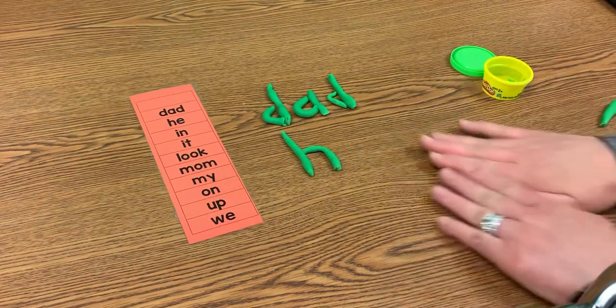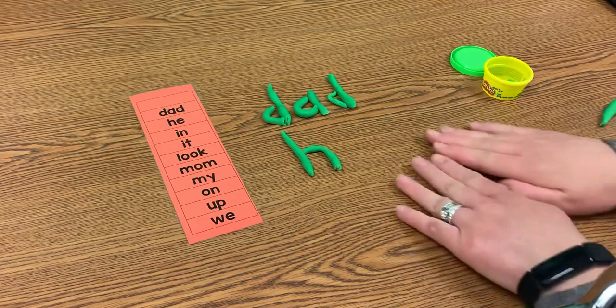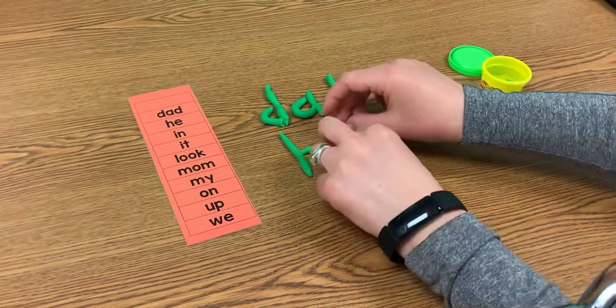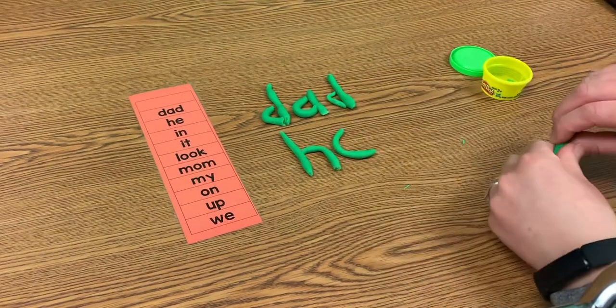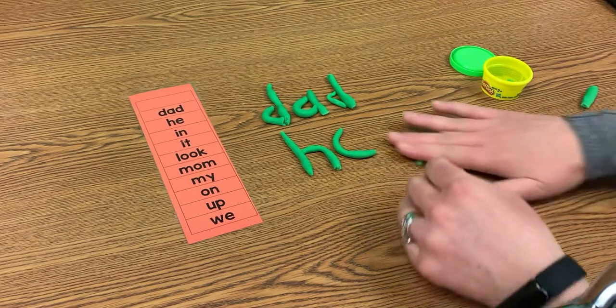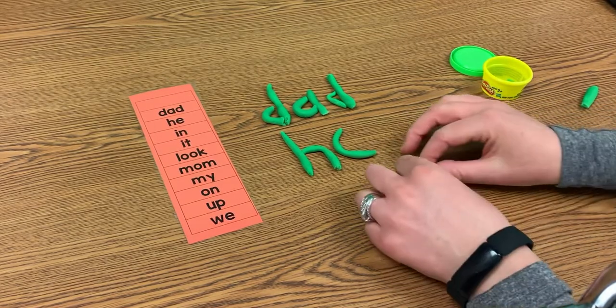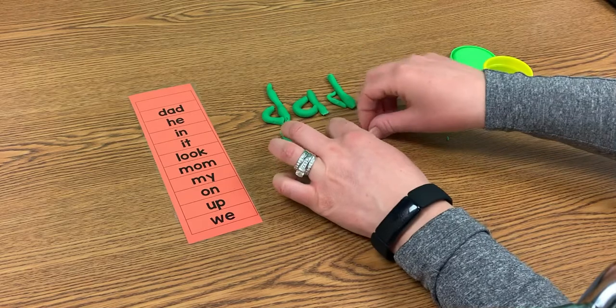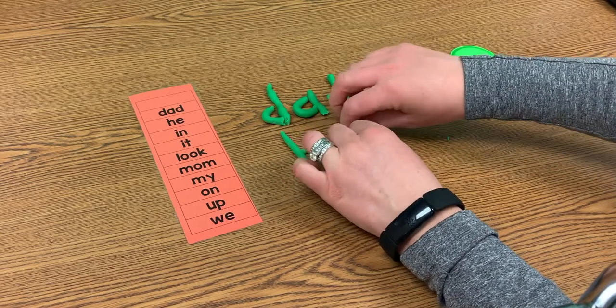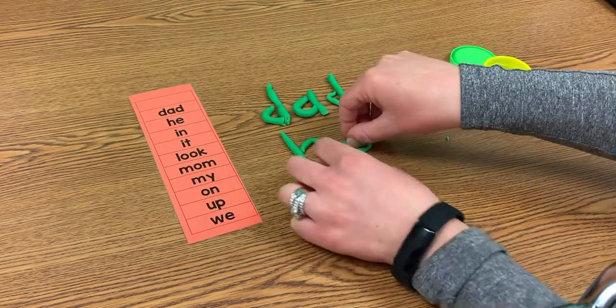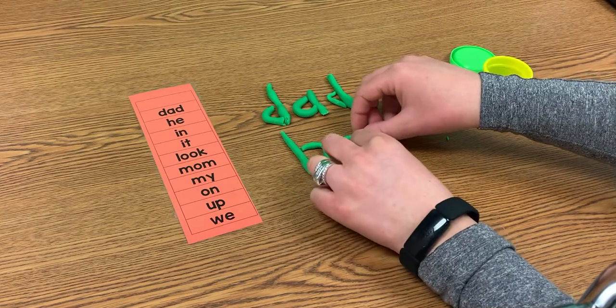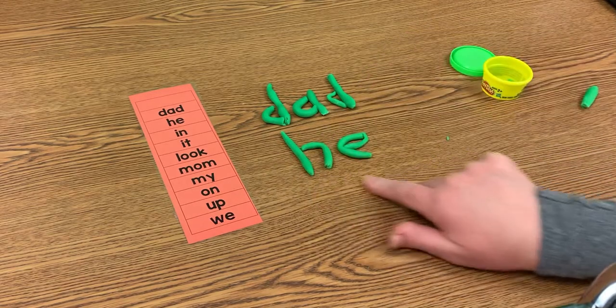Now I'm going to make my E. I'm going to make that curve and a little bit more. I'm going to curve that around. And I made the word HE.